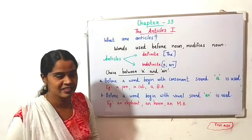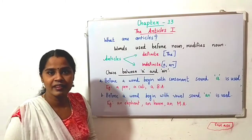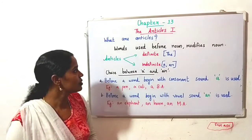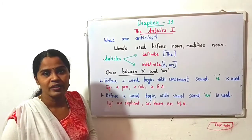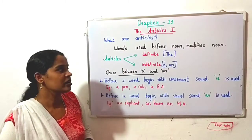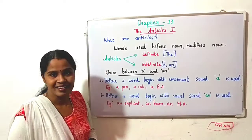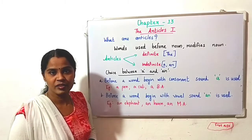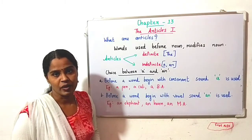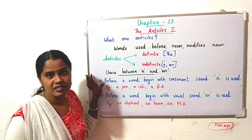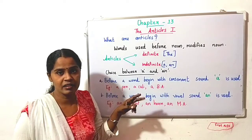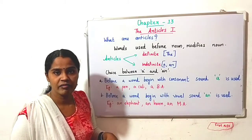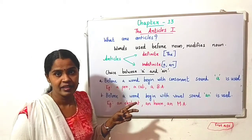Articles are words which we use before a noun to modify that noun. Articles are of two kinds: definite and indefinite articles. Definite article is 'the', then indefinite articles are 'a' and 'an'.